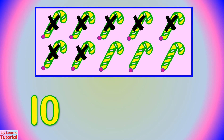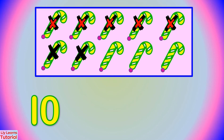Second, count the candy canes with an X mark. 1, 2, 3, 4, 5, 6, 7. That is the subtrahend. We write minus 7.